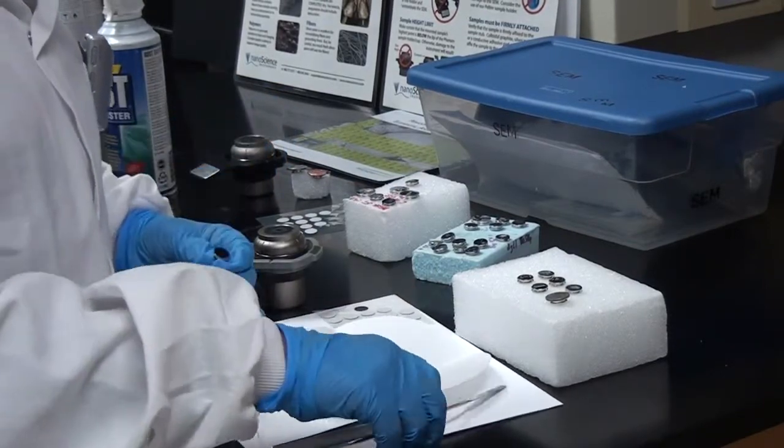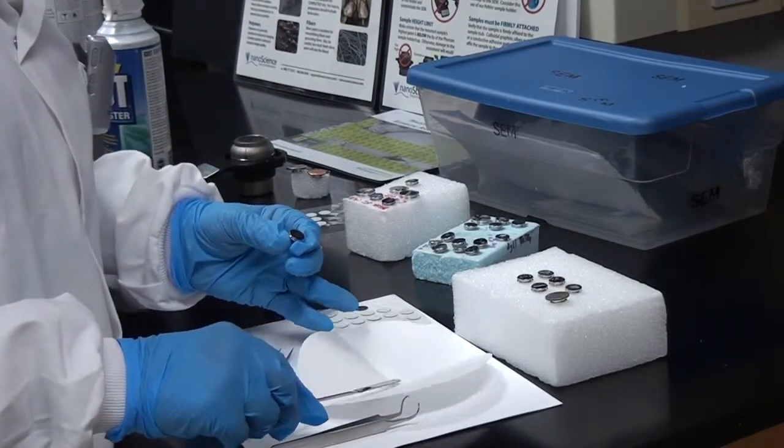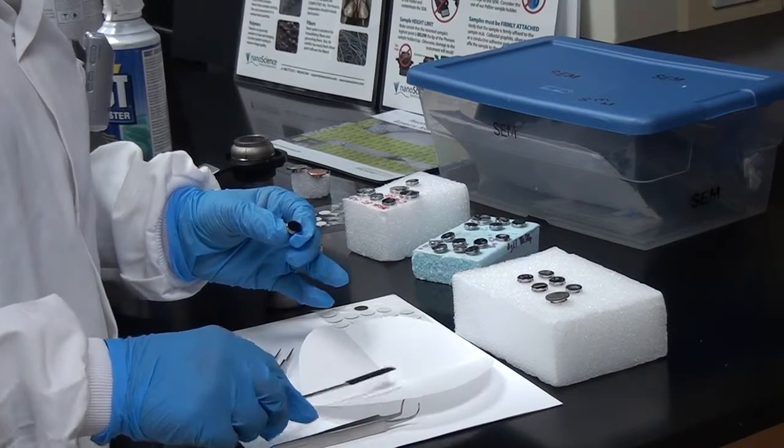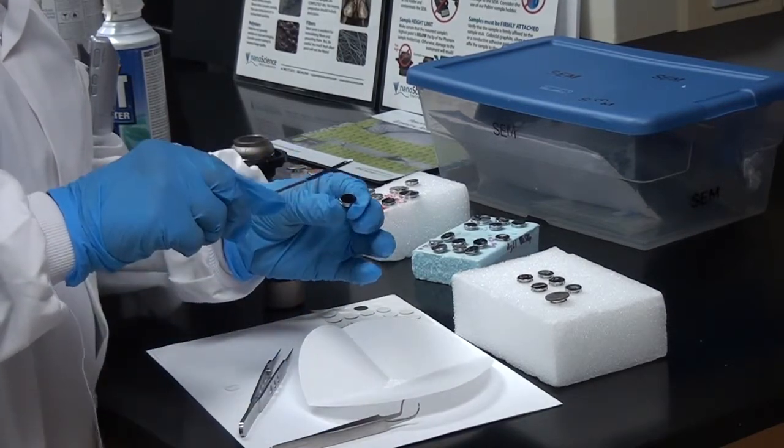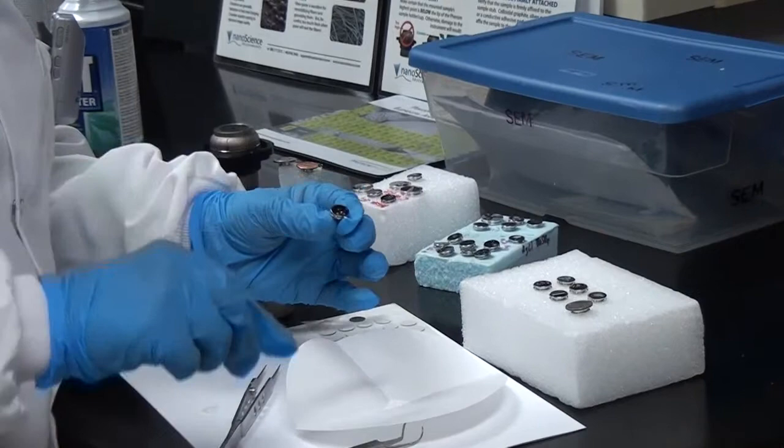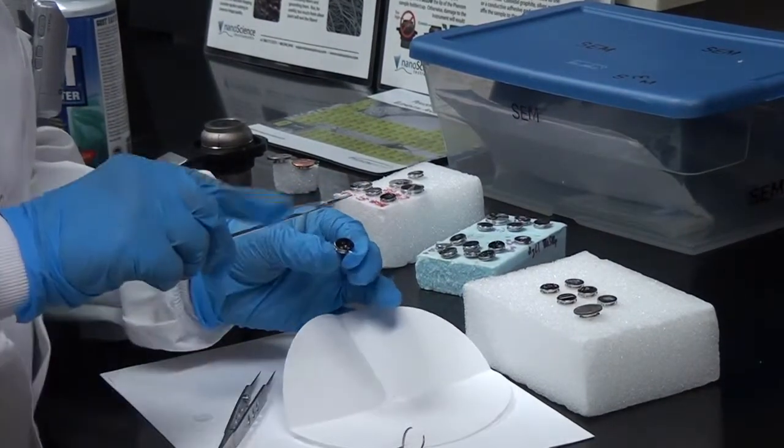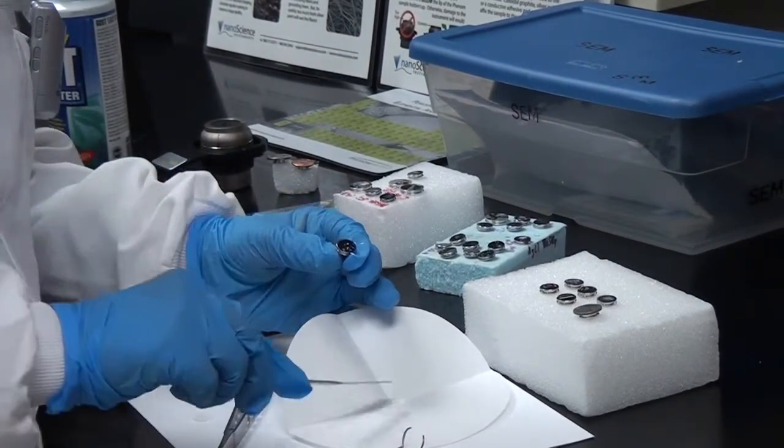For powder samples, a clean scoopula is used to sprinkle a little amount of the sample onto the carbon tape covered stub and the scoopula should be about 10 cm above the surface of the stub.